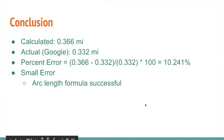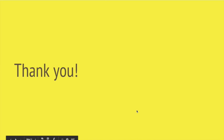In conclusion, what I calculated using the arc length formula was 0.366 miles for this curved path, and the actual distance of the path using the Google measuring tool was 0.332 miles. I calculated the percent error which was about 10.2%, relatively small, which meant the arc length formula was successful. That is my arc length project. Thank you.